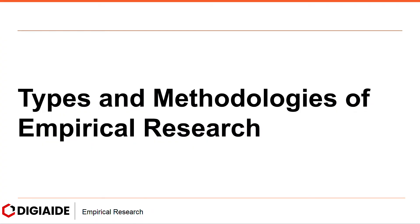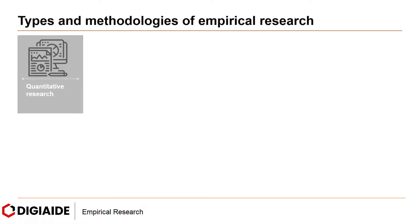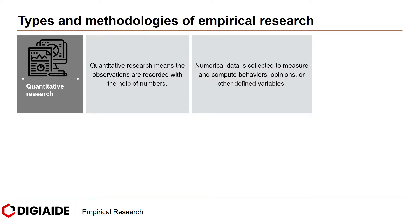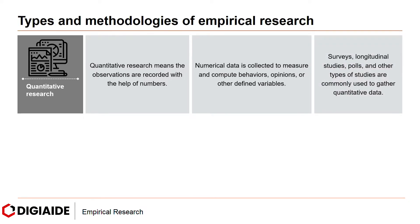Moving on to the types and methodologies of empirical research. Broadly, there are two. Quantitative research means the observations are recorded with the help of numbers. Numerical data is collected to measure and compute behaviors, opinions, or other defined variables. Surveys, longitudinal studies, polls, and other types of studies are commonly used to gather quantitative data.